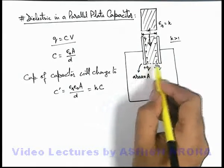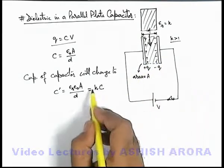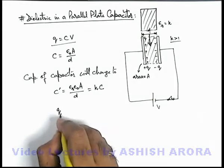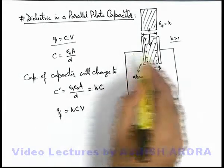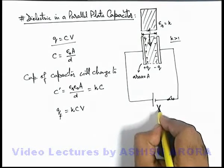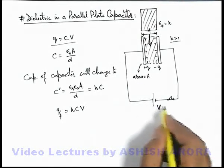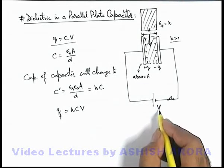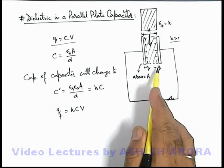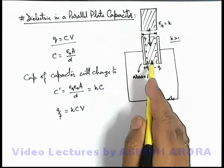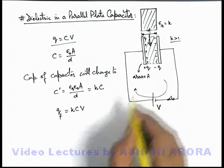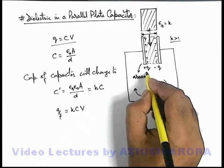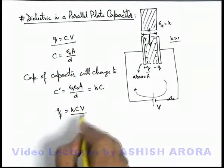And the final charge on the plates of capacitor must be kCV. We can directly write final charge in steady state must be kCV because the potential difference is maintained by the battery with potential difference V. So in this situation, as soon as the dielectric slab is inserted, some more charge is supplied by the battery so that the final charge will change from CV to kCV.